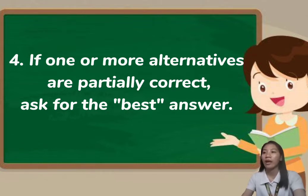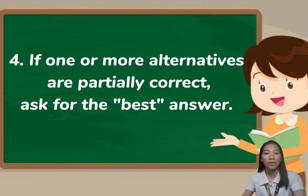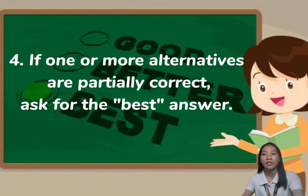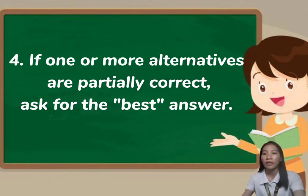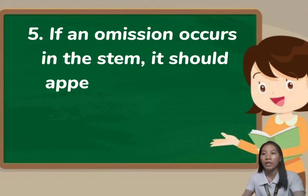If one or more alternatives are partially correct, ask for the best answer. There are instances during examinations where choices feel equally correct and it is hard to choose. That is why instructions often say 'choose the best and right answer.' If an omission occurs in the stem, it should appear near the end of the stem, not the beginning.